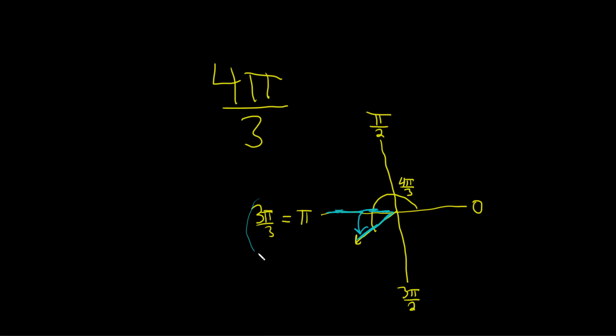Well, if you're at 3π over 3 and you're trying to get to 4π over 3, well this angle is just π over 3, because we added π over 3 more to get there. And that would be the reference angle, π over 3.